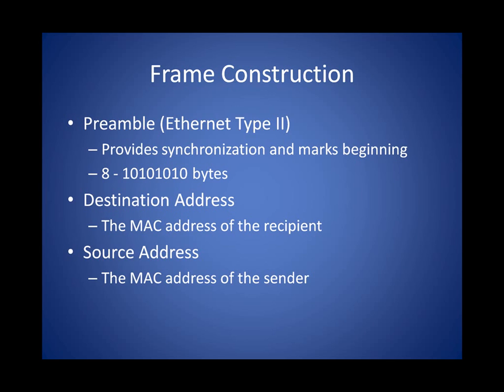Let's work through the first couple of fields. First up, we have the preamble — in Ethernet Type 2, that's 8 bytes of a 10101010 sequence. The reason we do that is so that network interface cards can sync up with each other, since things are moving pretty fast on an Ethernet network and we don't want any problems with the clocks. Following that, we have the destination address — this is the 6-byte MAC address of the node that's going to receive this.